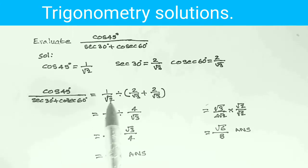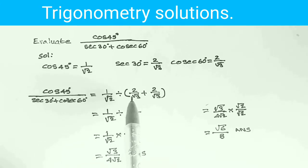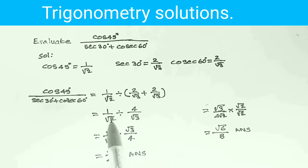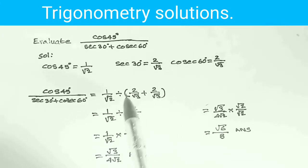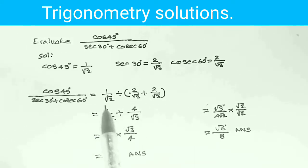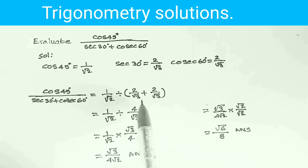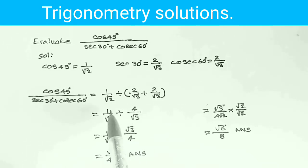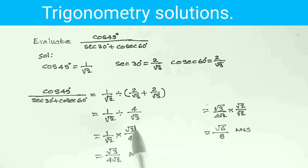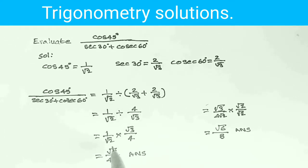cos 45 degrees equals 1 by root 2, divided by secant 30 degrees which is 2 by root 3, plus cos 60 degrees which is 2 by root 3, giving 4 by root 3. So 1 by root 2 multiplied by the reciprocal of 4 by root 3, which is root 3 by 4.